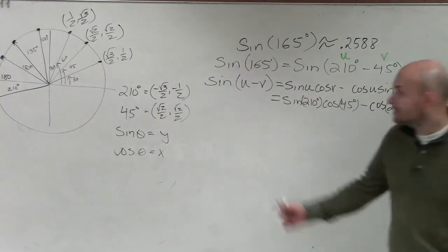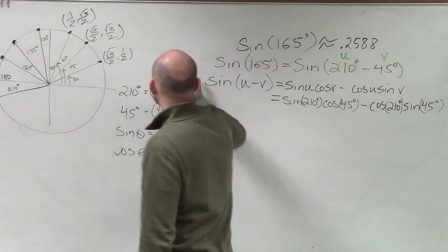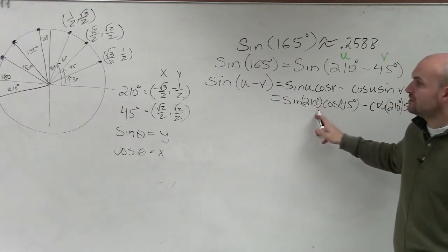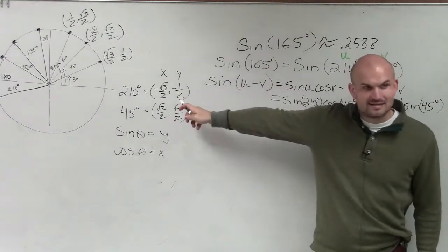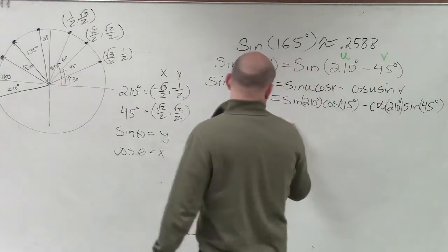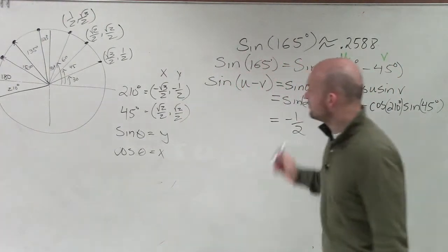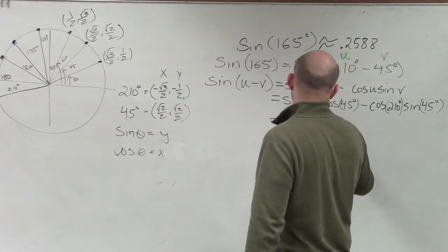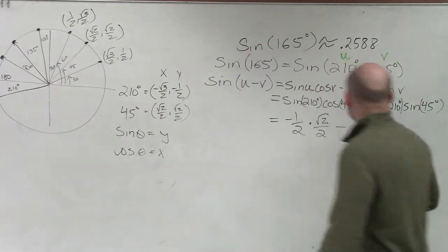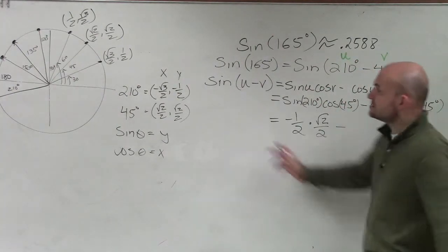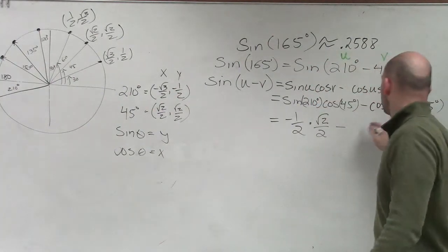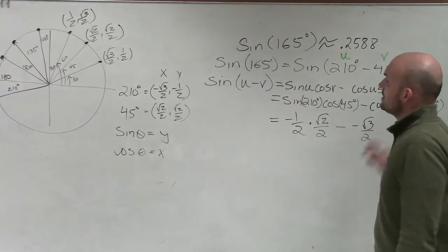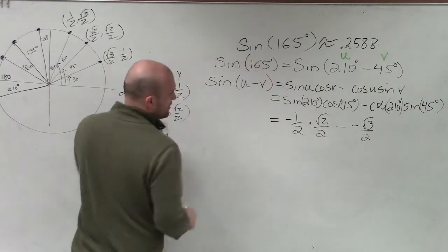So now all we're going to do is label our x's and our y's, and now we just plug them in. So the sine of 210 degrees is negative 1 half. The cosine of 45 degrees is square root of 2 over 2 minus the cosine of 210 degrees, which is negative square root of 3 over 2. So it's negative square root of 3 over 2 times the sine of 45 degrees, which is square root of 2 over 2.